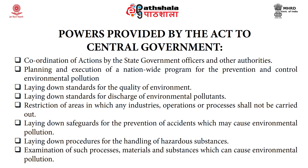The different powers given to the central government under the Act are: first, coordination of actions by the state government officers and other authorities, and planning and execution of a nationwide program for the prevention and control of environmental pollution. Third, laying down standards for the quality of environment. Fourth, laying down standards for discharge of environmental pollutants. Fifth, restriction of areas in which any industries, operations or processes shall not be carried out. Sixth, safeguards for the prevention of accidents which may cause environmental pollution.